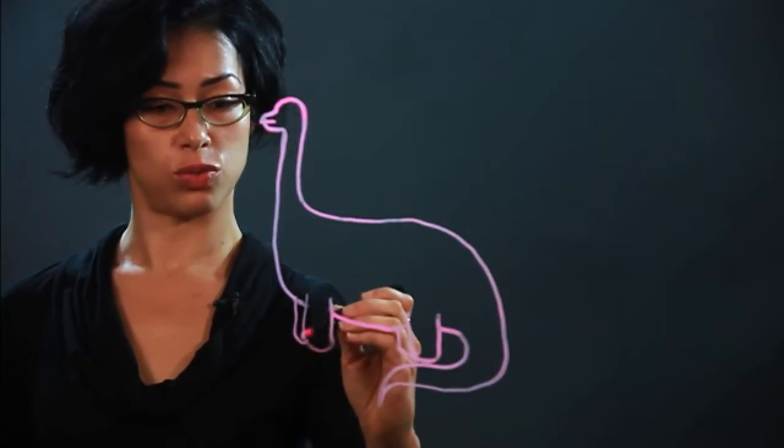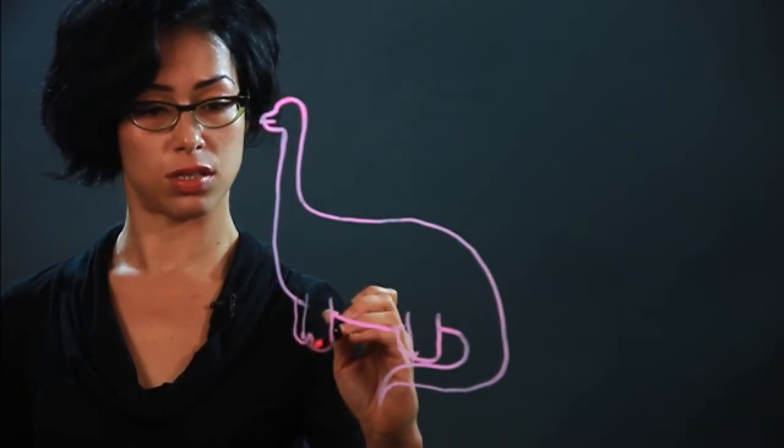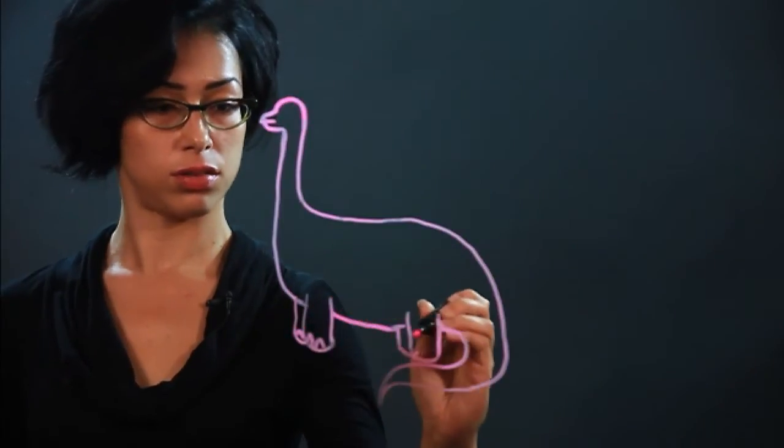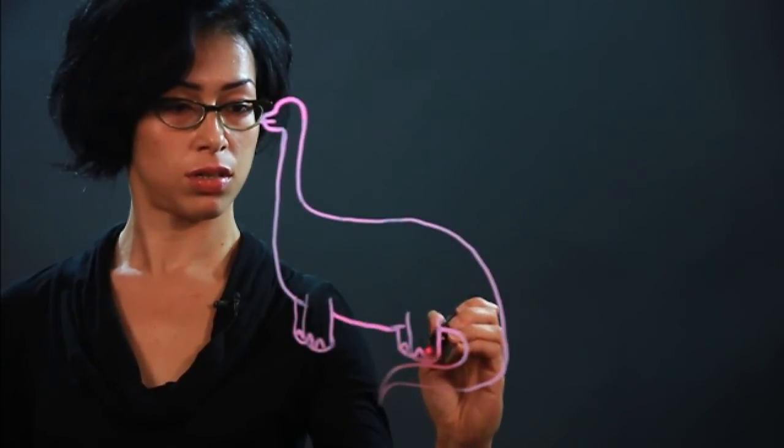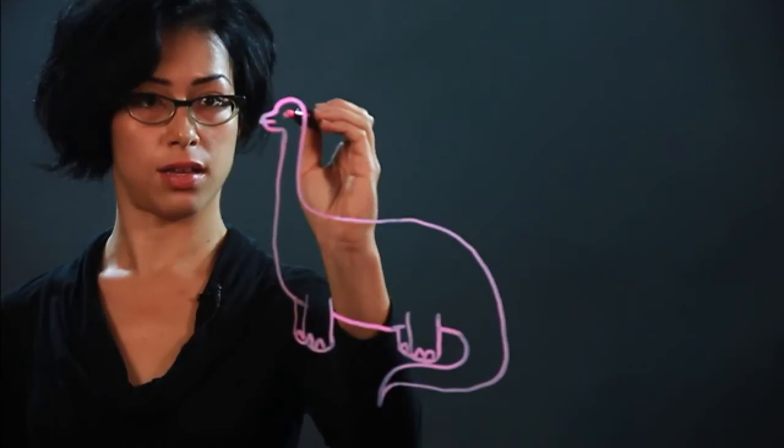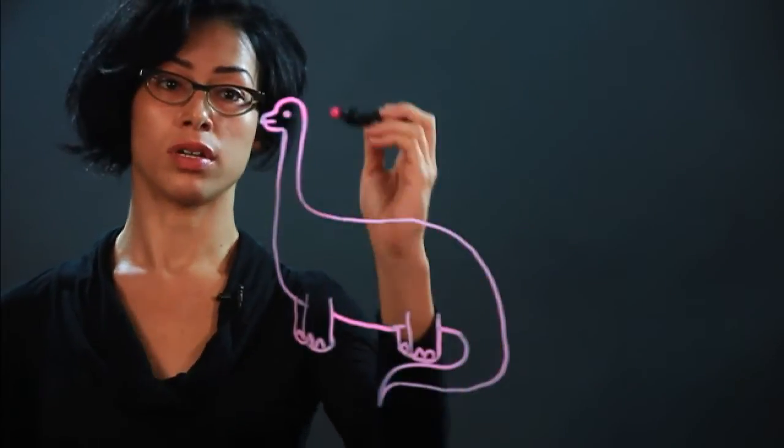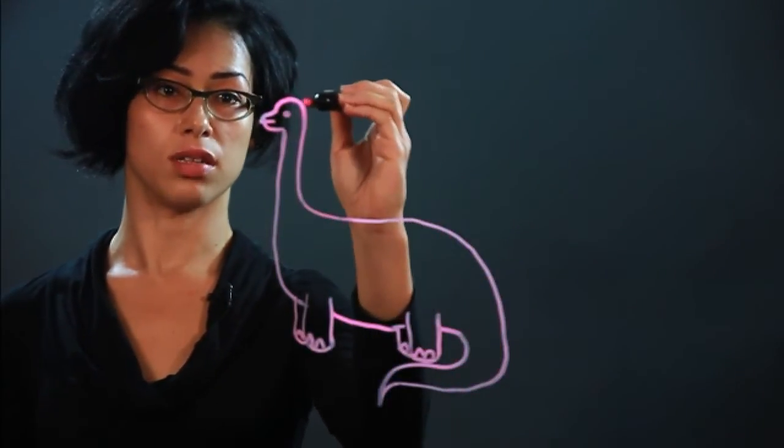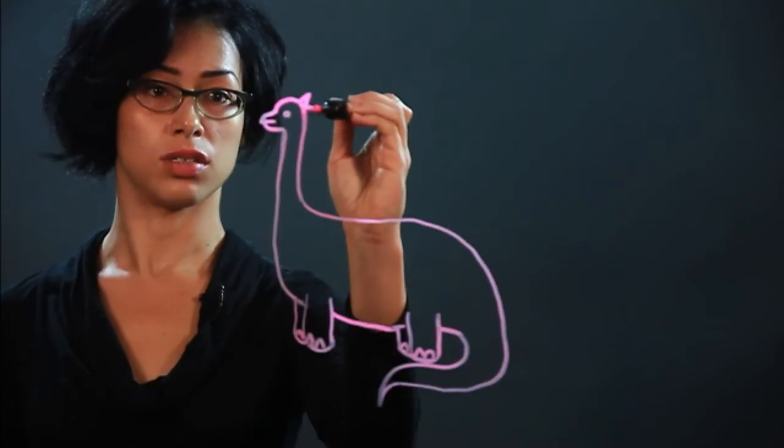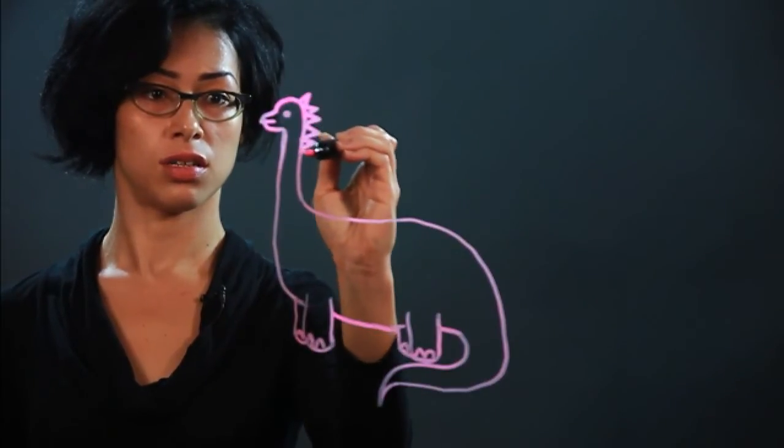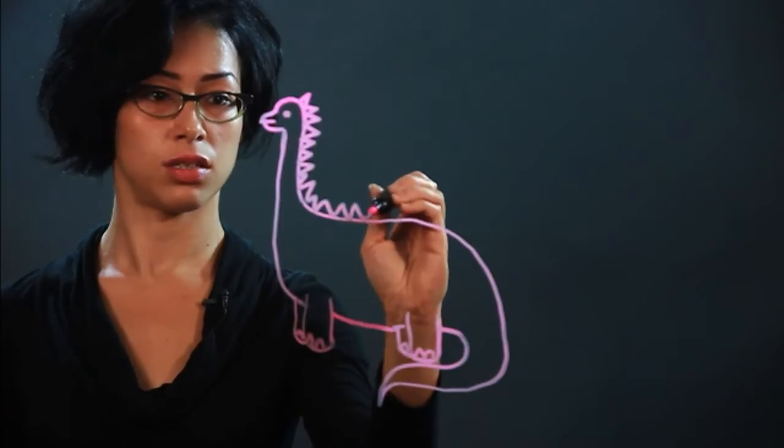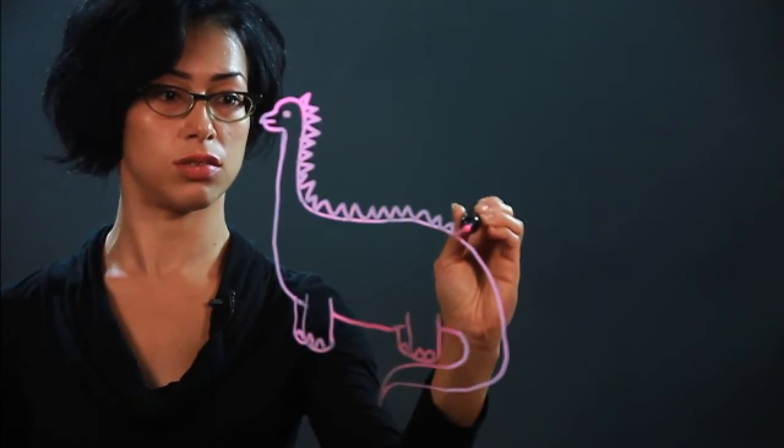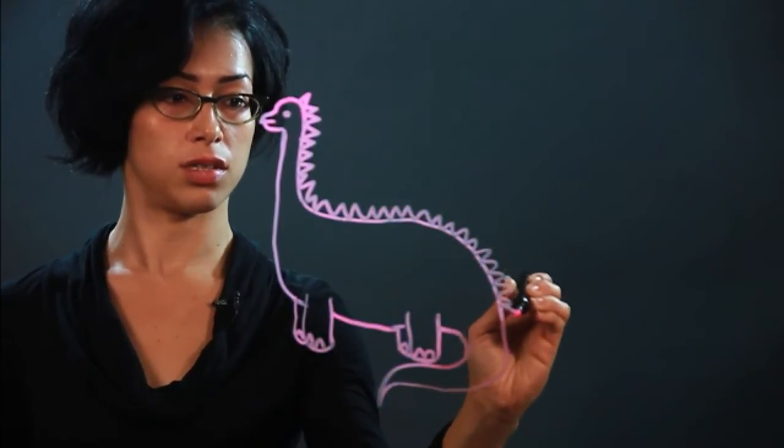I'm going to draw some toes in here. So these are just half circles. And an eye. And if you want, you can draw spikes going down the back of his spine. It's just a zigzag line. Continuous until the end of the tail.